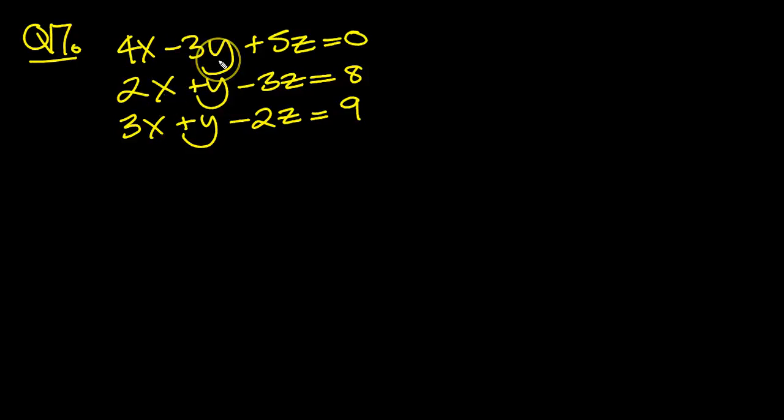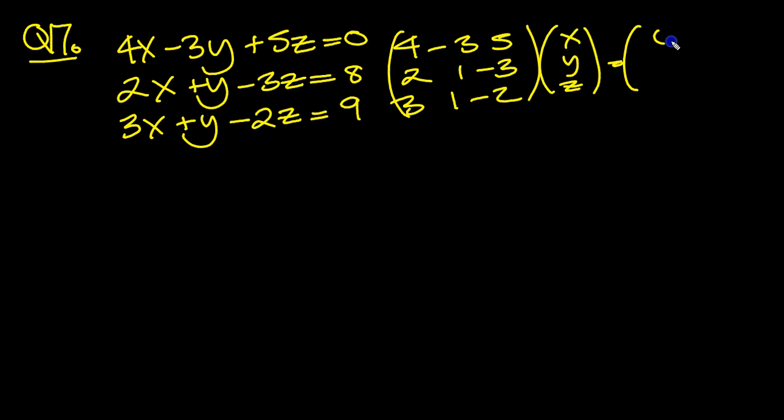Okay, then let's have a go at 17, shall we? Let's write this in matrix form. 4, -3, 5. 2, 1, -3. And 3, 1, -2. Yeah, that's our matrix. Times the x, y, z will equal the numbers 0, 8, and 9. There we go. That's the matrix form then.